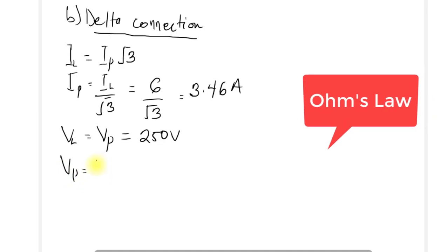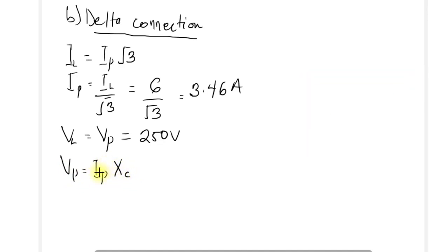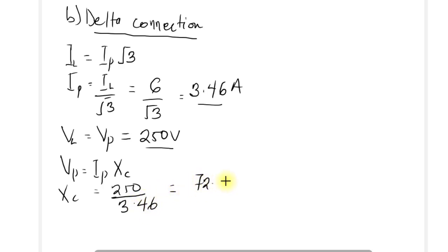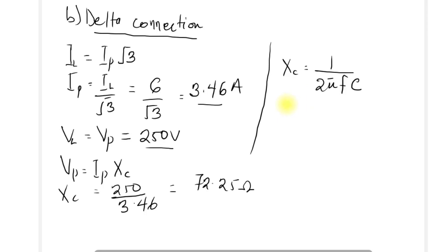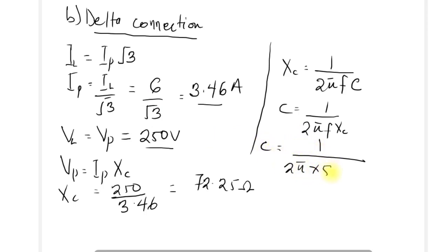Applying Ohm's law, the phase voltage equals the phase current times the capacitive impedance. Making Xc the subject, Xc = 250 / 3.46 = 72.25 ohms. Using C = 1 over 2πf·Xc, with f = 50 Hz, we get C = 1 over (2π × 50 × 72.25), which equals 44.05 microfarads.